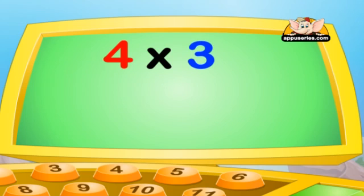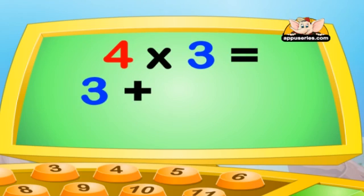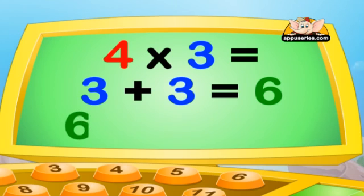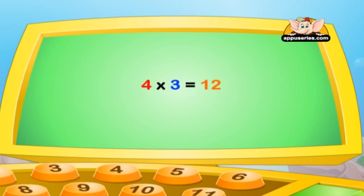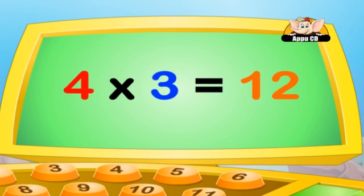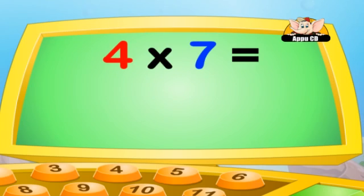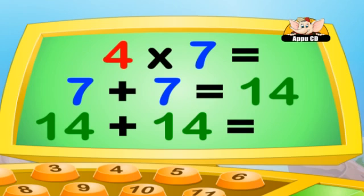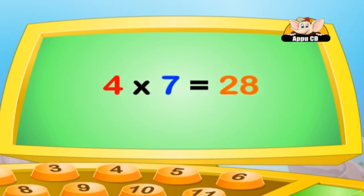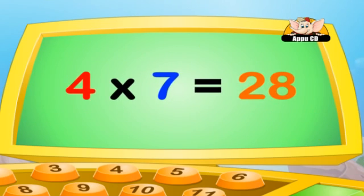Let's see with the 4's table now. 4 into 3 is equal to 3 plus 3, which is 6, and 6 plus 6, which is 12. Therefore, 4 into 3 is equal to 12. If it's 4 into 7, then 7 plus 7 equals 14, and 14 plus 14 equals 28. Therefore, 4 into 7 equals 28.